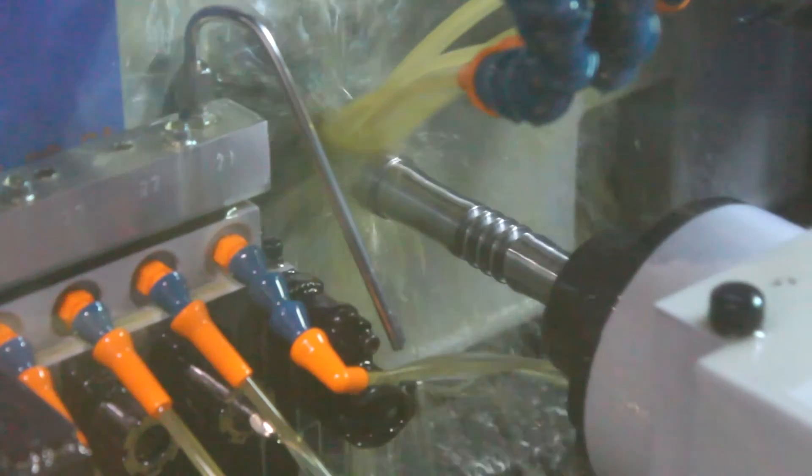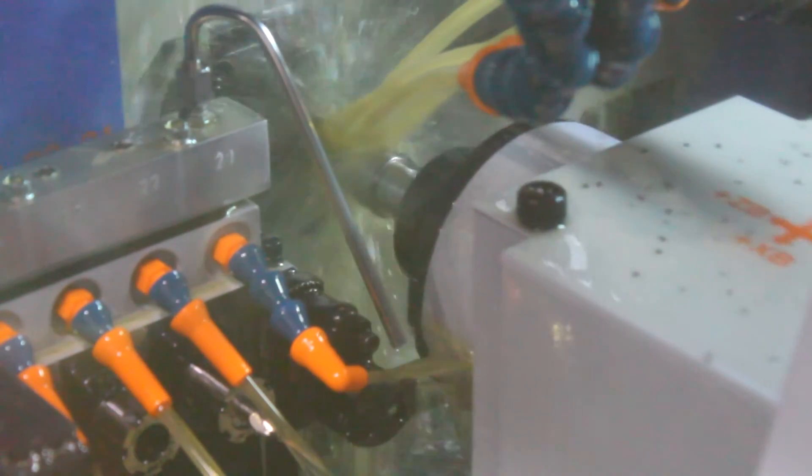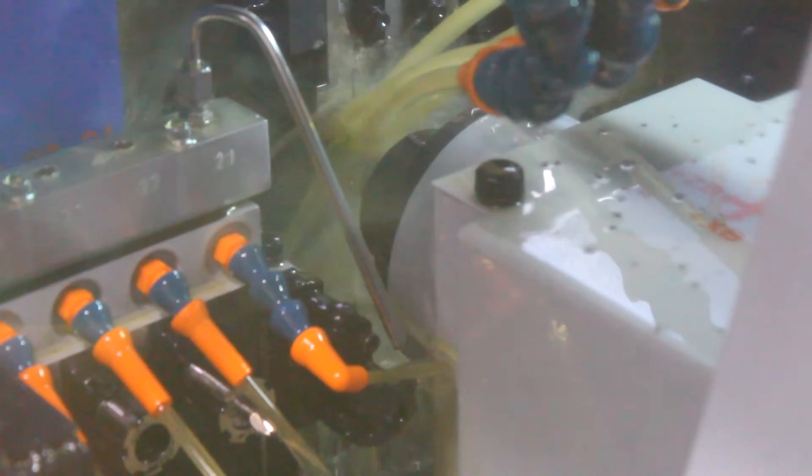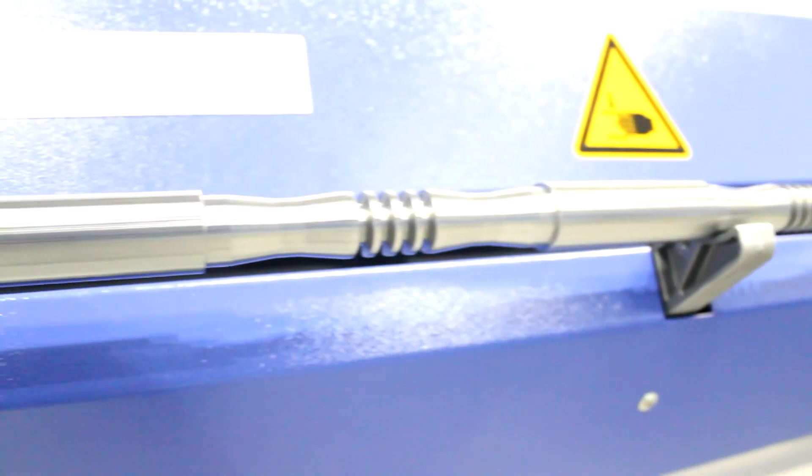When we run the cycle again, the next shaft will push this part down the long guide tube until it ejects at the rear of the machine.